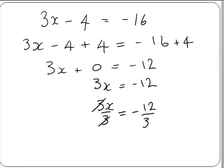So 3 will divide into 3 once, which will leave us with 1x. And 3 will divide into the 12 four times. So we are left with minus 4. So this just is x equal to minus 4.